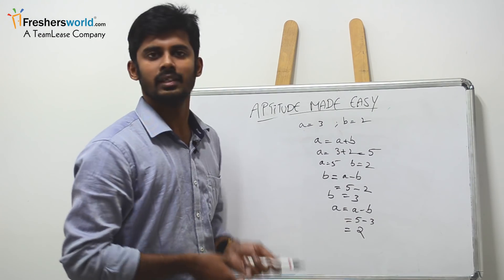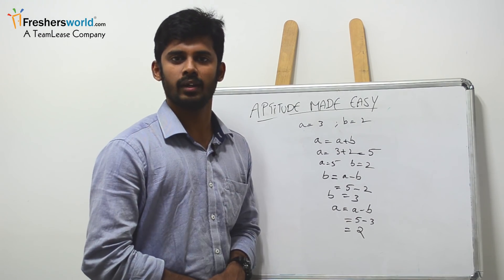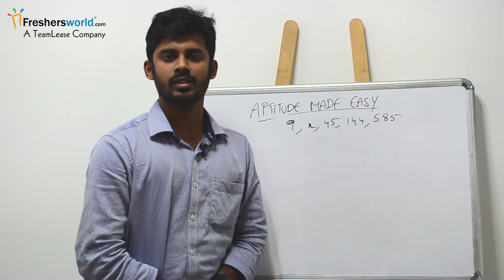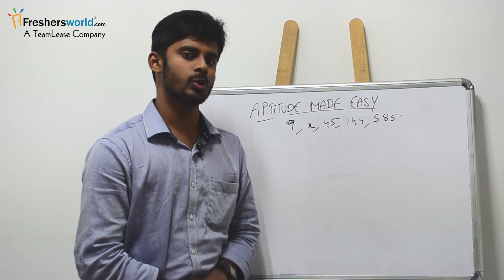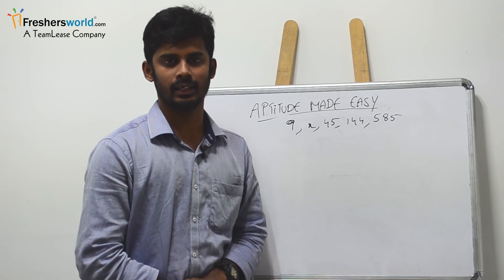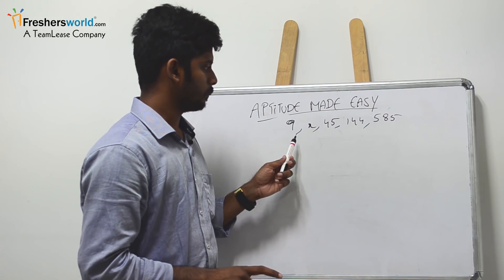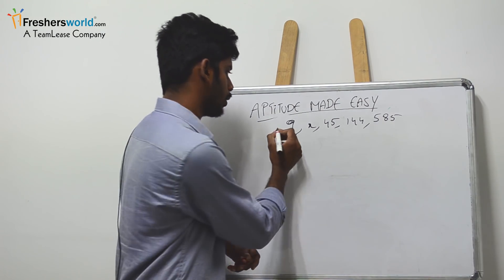Let's move on to the fourth one. In this fourth question, I'll explain how to do a number series solution easily. For example, we have a question like this: 9, some x number, 45, 144, and 585.